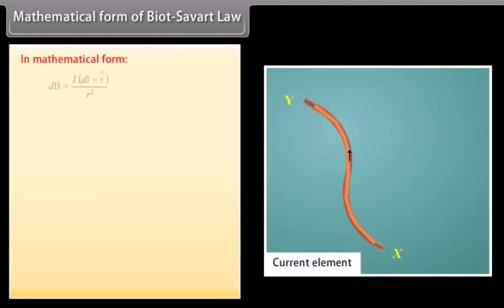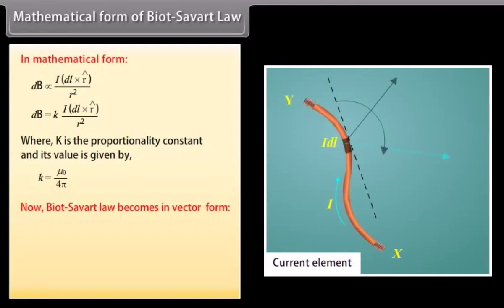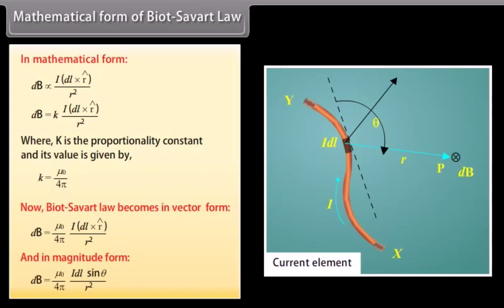Mathematical form of Biot-Savart law: dB = k · i(dl × r̂) / r², where k = μ₀ / 4π. Therefore dB = (μ₀ / 4π) · i(dl × r̂) / r². In magnitude form: dB = (μ₀ / 4π) · (idl sinθ) / r².